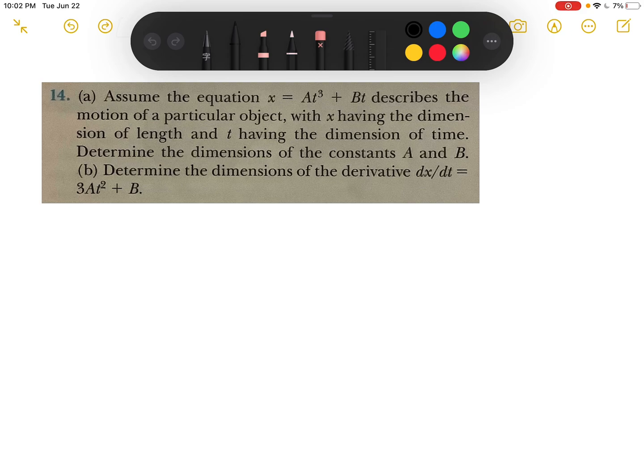So for part A, we need to determine the dimensions of the constants A and B. First we need to convert this equation to dimensions. So x will be length and t will be time T.